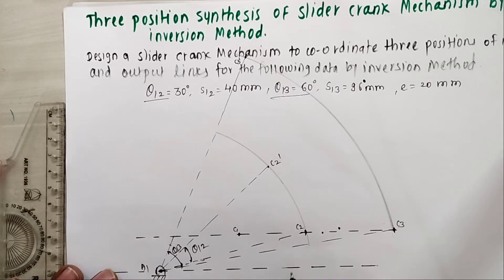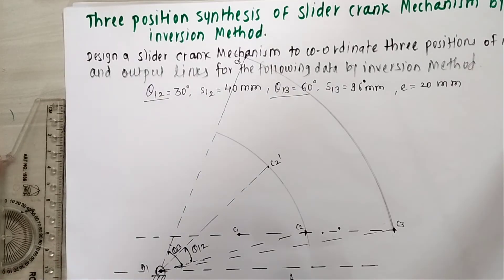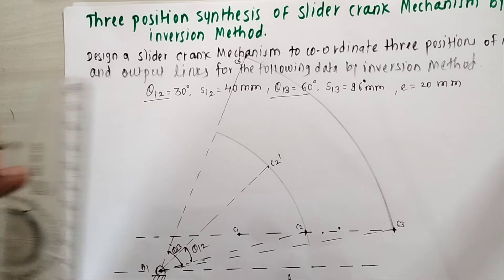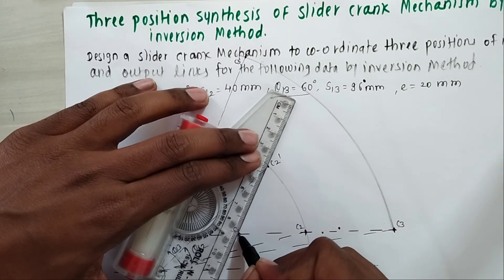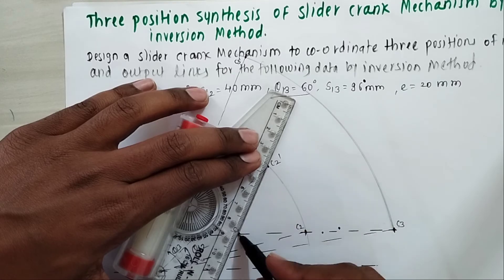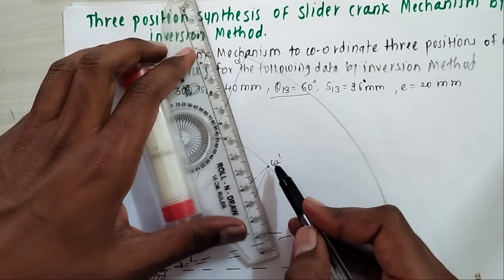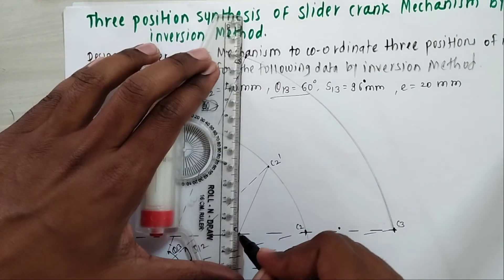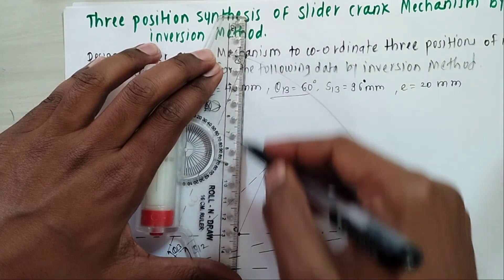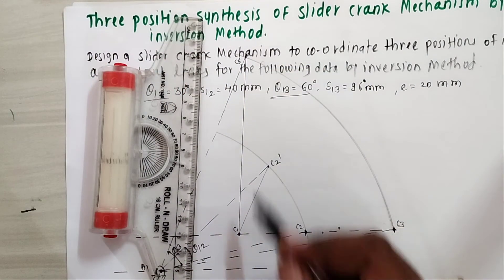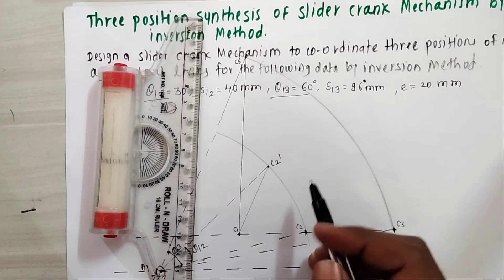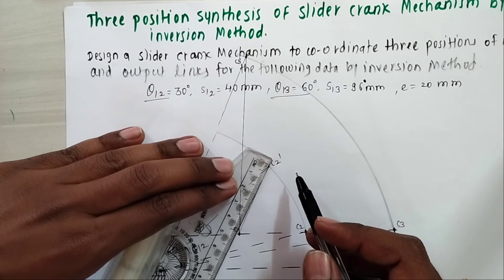Once you get C2 dash and C3 dash, next step is to join C1 with C2 dash and also join C1 with C3 dash. After joining, next step is to draw perpendicular bisectors of these two.